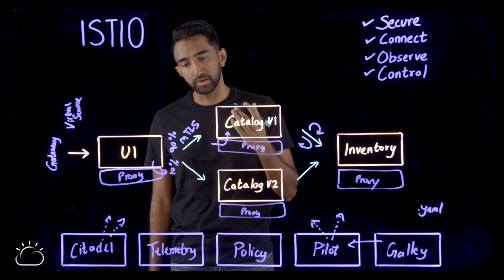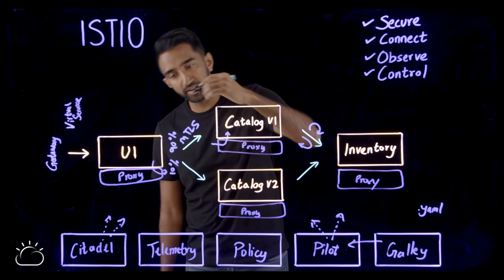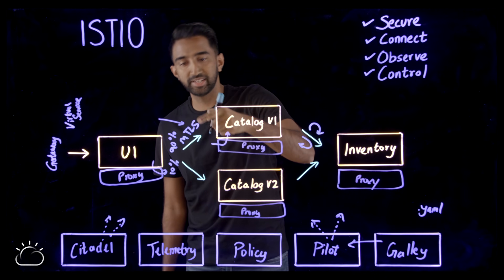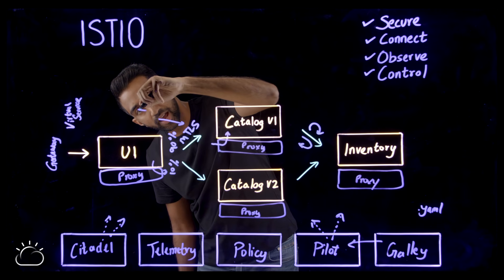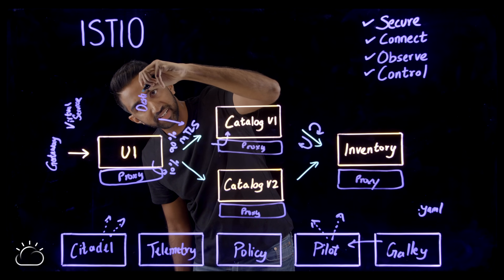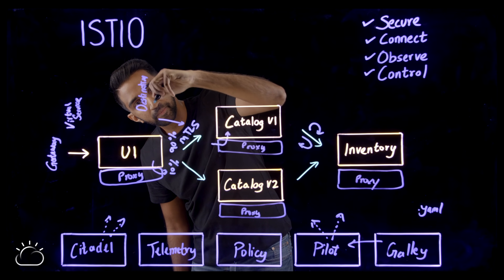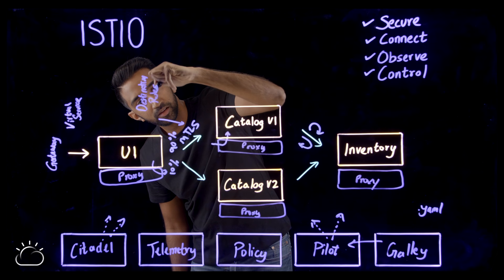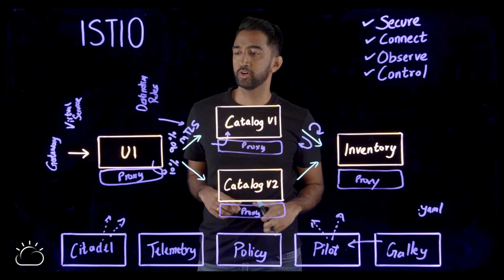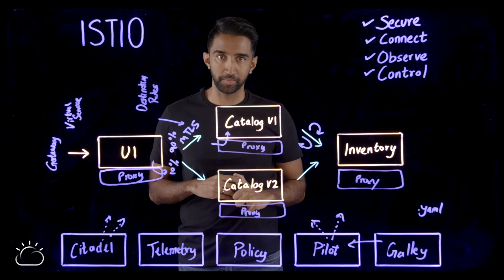Once traffic is routed, you can apply rules on top of that traffic, such as TLS settings or circuit braking, and those are done using destination rules. And those are the three main resources you need to know about Istio.